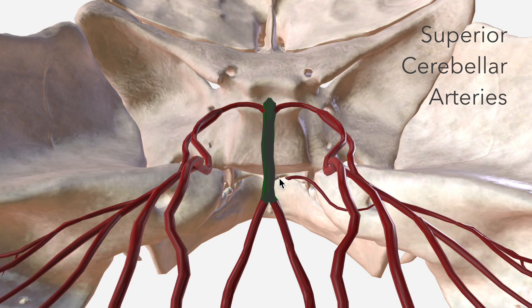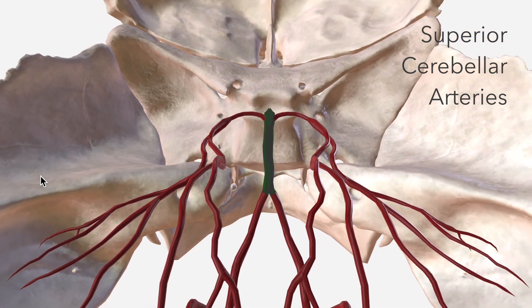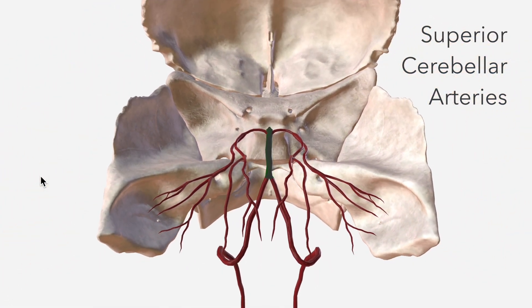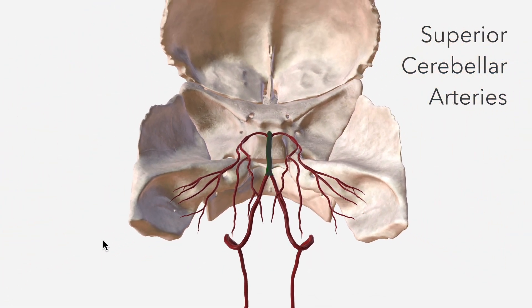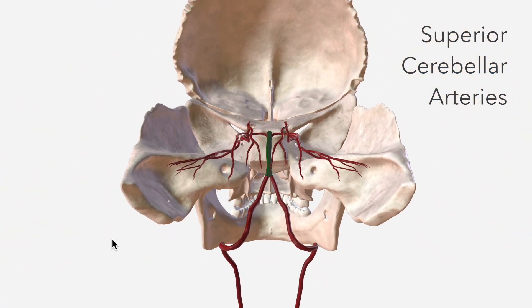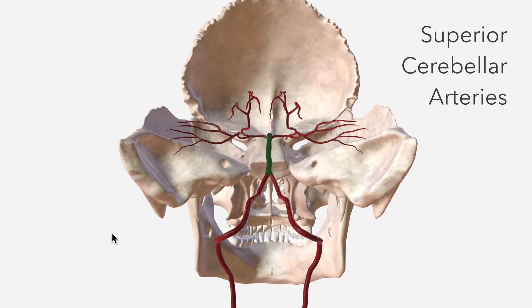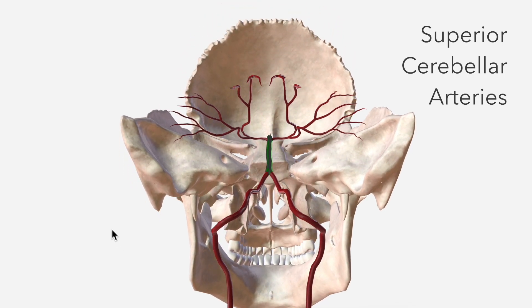Their course is quite complicated, so I'll remove all of the other branches we've discussed already, so that we can view them in isolation. That's the superior cerebellar arteries there.